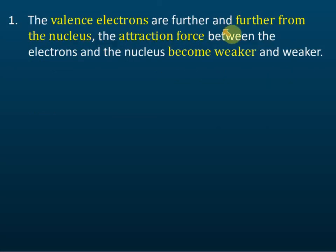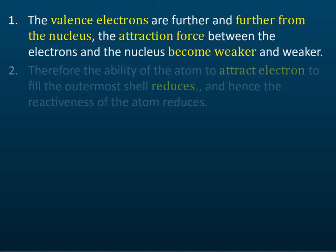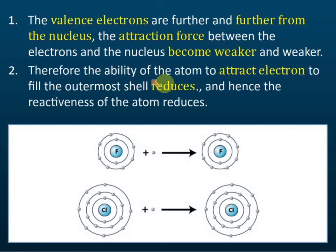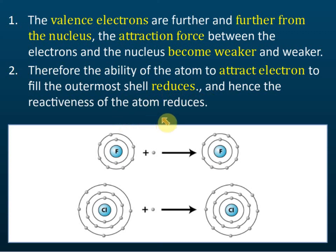As you go down the group, the valence electrons are further and further from the nucleus, so the attraction force between the electrons and the nucleus becomes weaker and weaker. Therefore, the ability of the atoms to attract electrons to fill the outermost shell reduces, and the reactivity of the atom decreases.